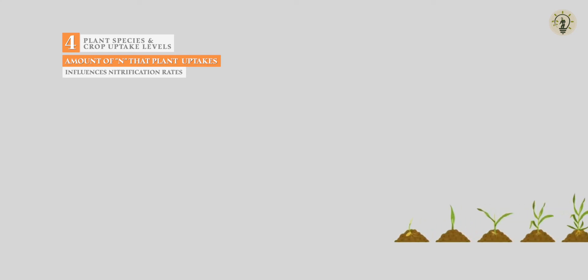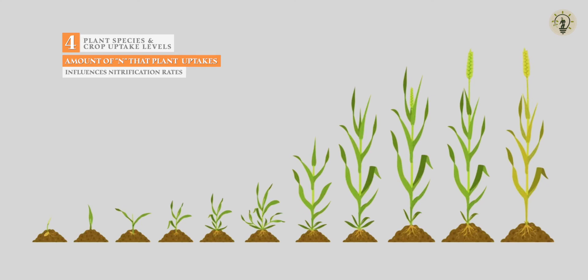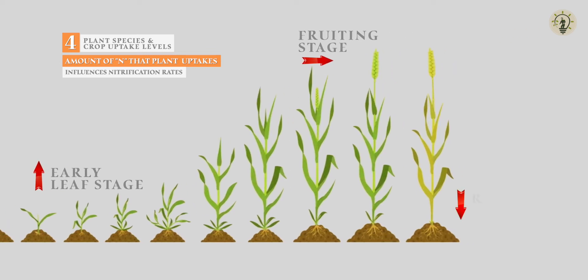The amount of nitrogen taken up by plants also influences nitrification rates. Nutrient uptake patterns vary with different crop stages. Generally, plants uptake nutrients from the soil immediately after root development. It begins at early leaf stages, increases at fruiting stage where it reaches an optimal level, and finally declines at ripening stage. Nevertheless, hydrolysis and nitrification require all those specific conditions, or else the efficiency of urea application and the time required to convert into plant available form changes.